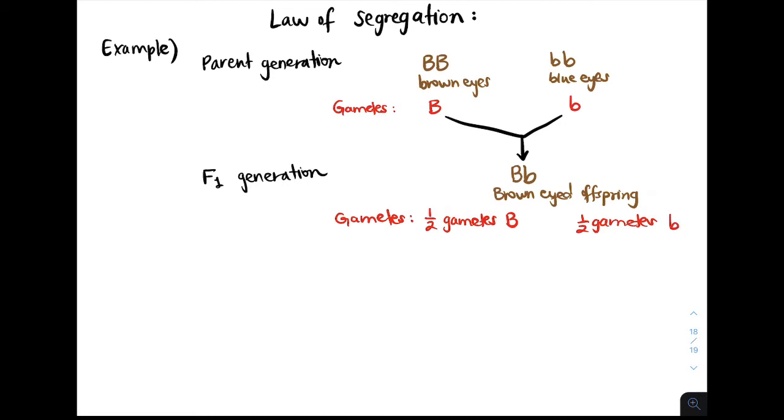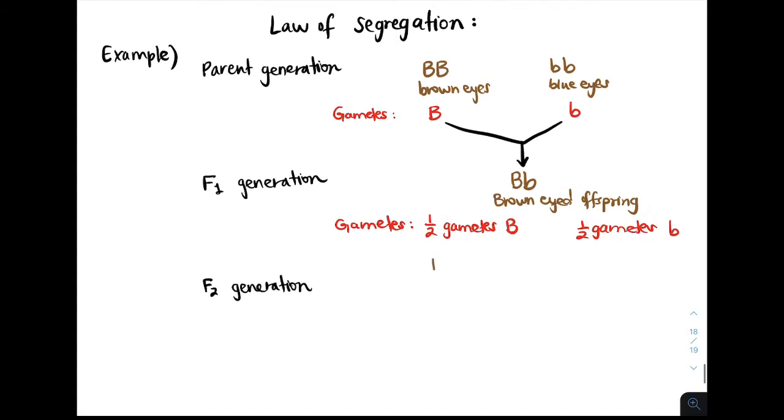So if you cross two heterozygous individuals, then in the F2 generation, our Punnett cross will look like this. We'll have one parent that has a big B and a little b, and another parent that also has a big B and a little b. And our resulting possible gametes look like this.